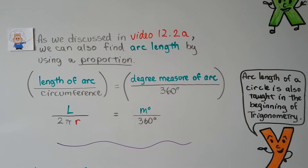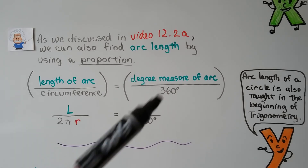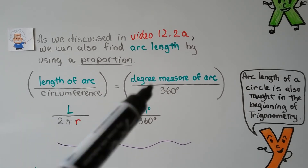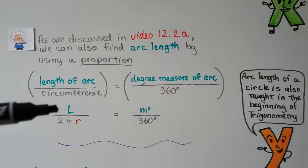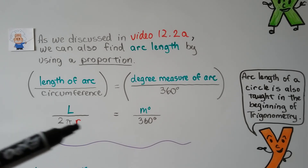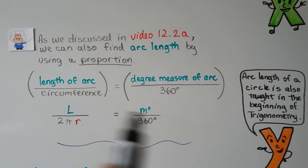Now we talked about this a little bit back in video 12.2A. We can also find arc length by using a proportion. This is: the length of the arc over the circumference is equal to the degree measure of the arc over 360. We would have L for length of the arc over 2πr — that's the circumference formula — and it's going to be m degrees over 360 degrees, set equal to each other.